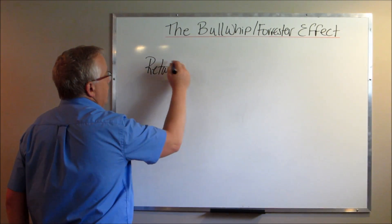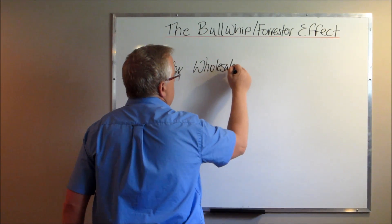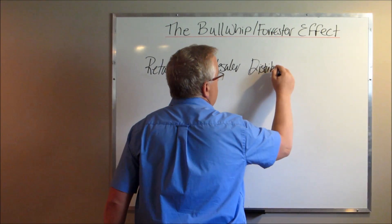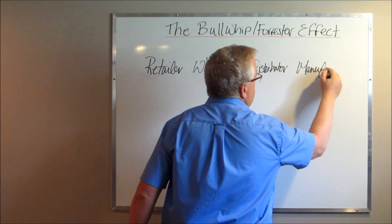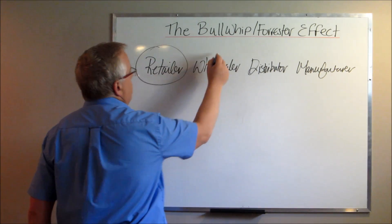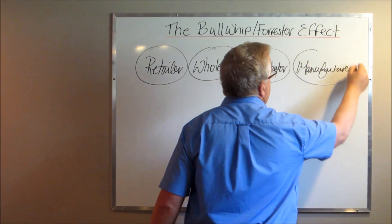So we've got the retailer, and then you've got the wholesaler, and then you've got the distributor, and then you've got the manufacturer. Circle around these guys. One, two, three, and four.